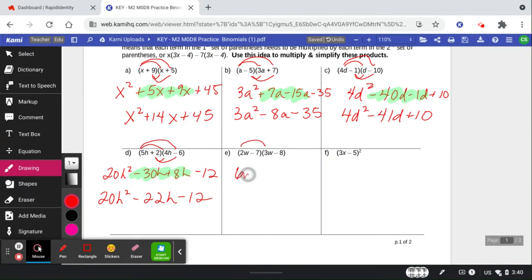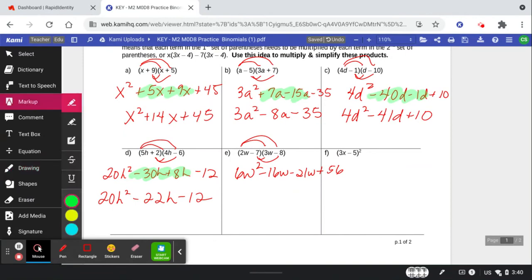2 times 3. Negative 16w. Minus 21w. Plus 56. Combine that middle term. That's negative 37w. Plus 56. How'd you do?